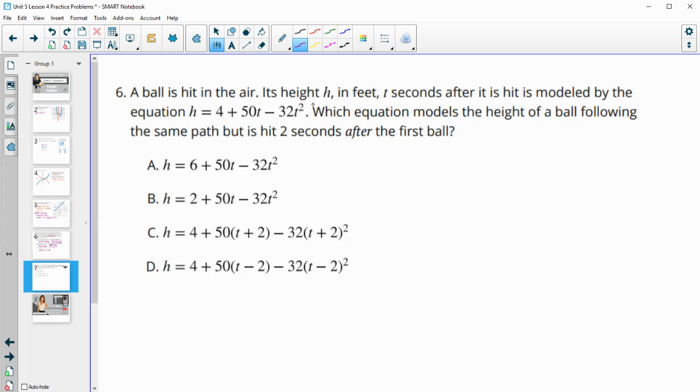Number six, a ball is hit in the air. Its height in feet T seconds after it's hit is modeled by this equation. Which equation models the height of a ball following the same path, but it's hit two seconds after the first ball? So remember two seconds after, and we're talking the time now. So this is going to impact the T value. So something is going to change in the T. So it's not A or B, which is impacting the output. This is impacting the input. And remember two seconds after when we go inside of the function, it's always kind of opposite of what you think it's going to be. So two seconds after seems like it should be plus two, but it's actually minus two, so that the functions match.